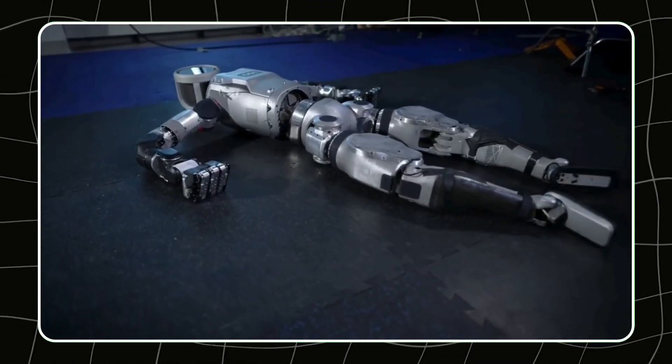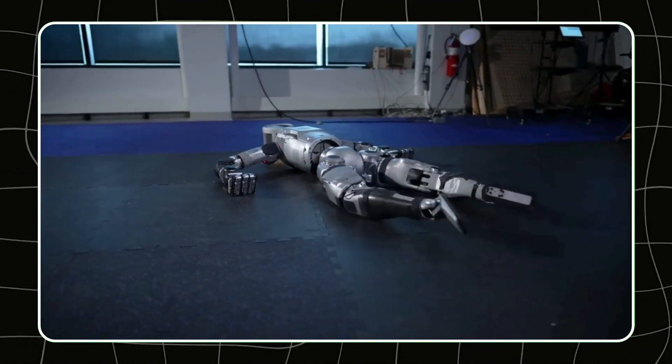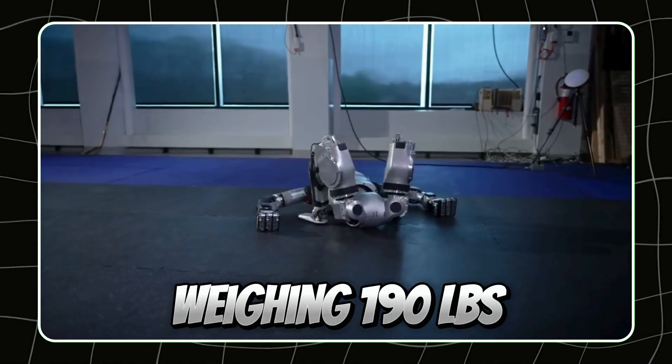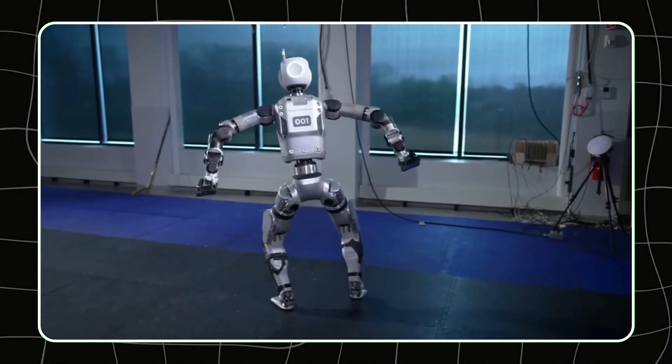Next, we turn our attention to the iconic Atlas by Boston Dynamics. This robot stands at 5'0" and weighs 190 pounds. What it lacks in height, it more than makes up for in agility.